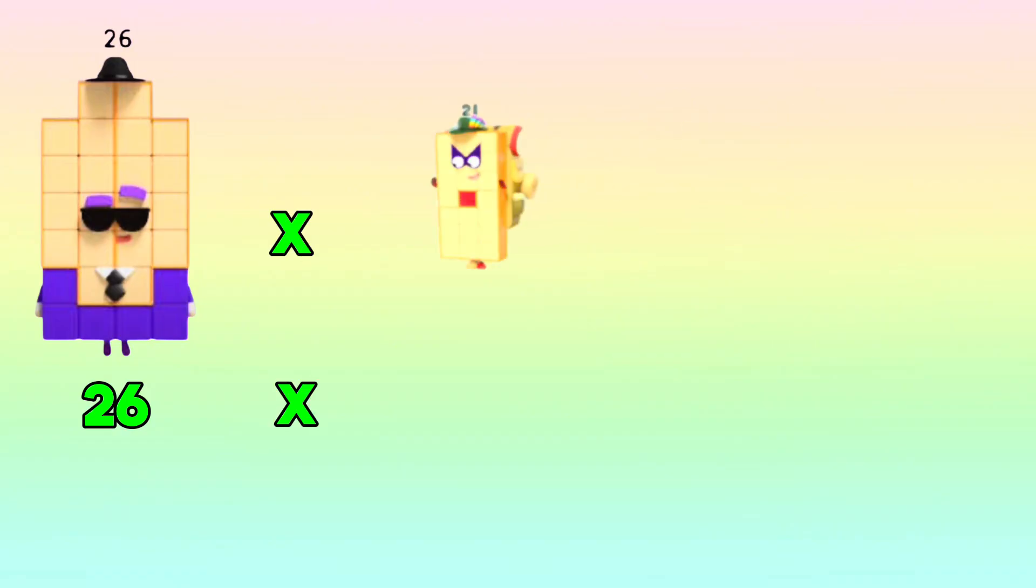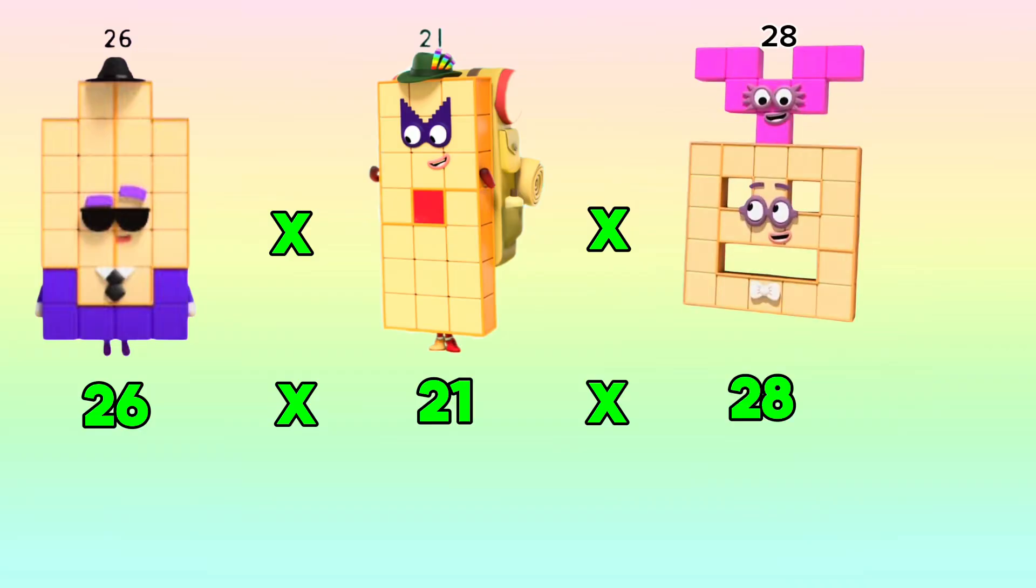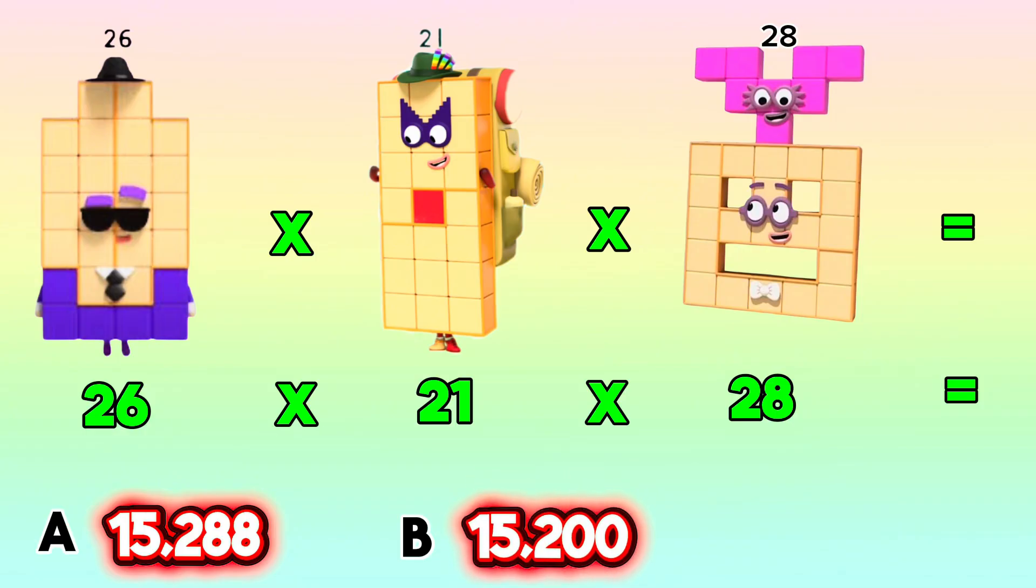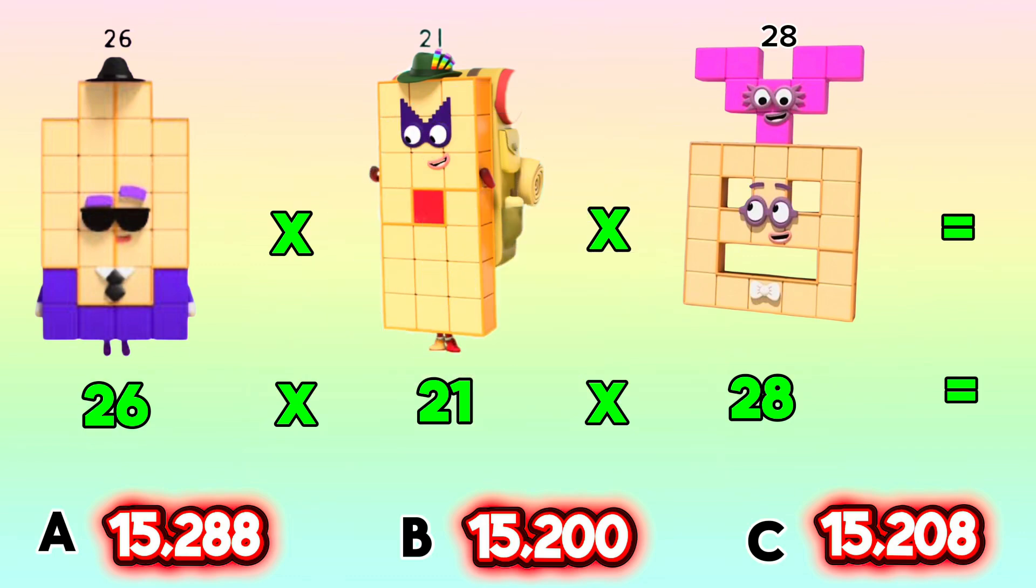26 times 21 times 28 equals: Is it letter A, 15,288? Or is it letter B, 15,200? Or is it letter C, 15,208? And the correct answer is letter A, 15,288. Next question.